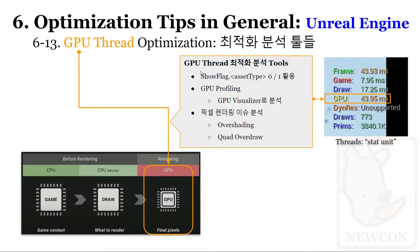GPU 스레드 최적화 툴로는 Show Flags, GPU Visualizer, 그리고 Overshading과 Quad Overdraw 분석 세 가지가 있습니다. Show Flags는 커맨드로 asset type별로 on/off 할 수 있으며, GPU Visualizer는 GPU 렌더링의 세부 내역을 시각적으로 보여줍니다. Overshading과 Quad Overdraw는 픽셀 렌더링 기반 실시간 그래픽스에서의 주요 이슈입니다.